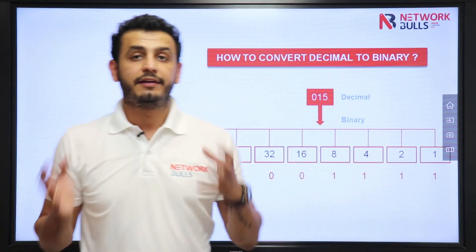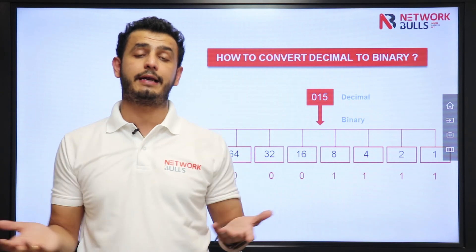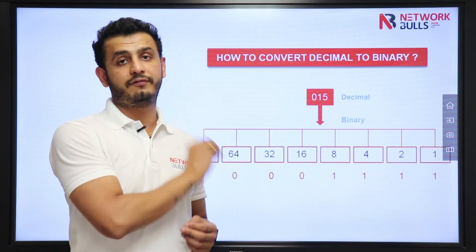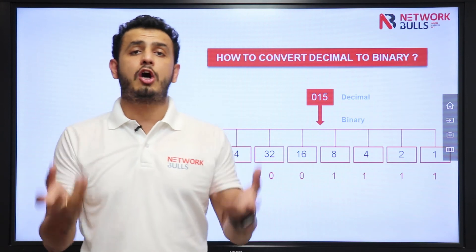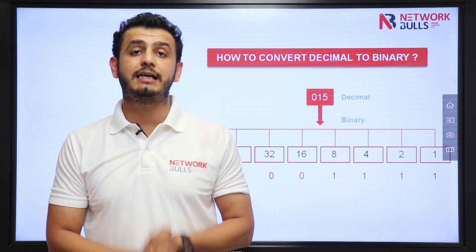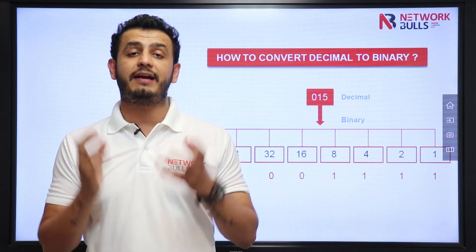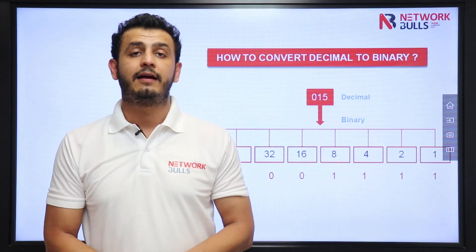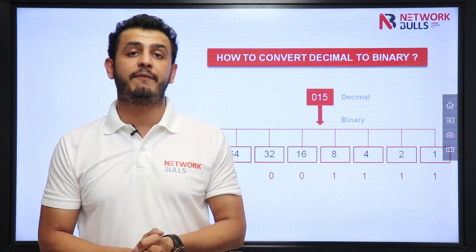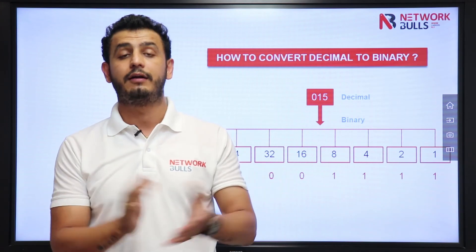So guys, this is how you can convert decimal into binary. The main focus of this video is to make sure you understand that an IP address is divided into 4 octets. In each octet we have 8 bits, and for those 8 bits we can have a minimum value of 0 and a maximum value of 255. Thank you.